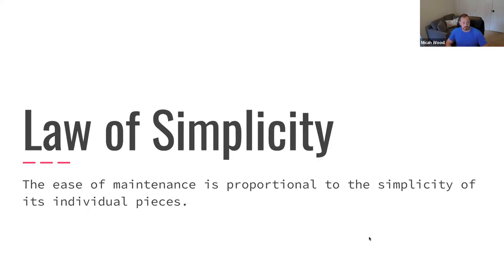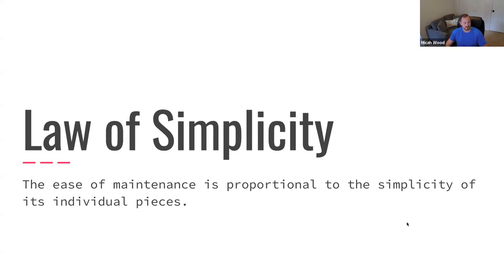The law of simplicity says it's a lot easier to maintain things that aren't complicated. There can be areas of code that are simple and areas that are complex, and it's obviously going to be much easier to maintain those that are simple and clear to anybody who looks at them. We'll take a look at how we can simplify some of these things.